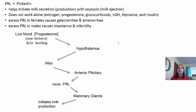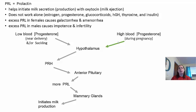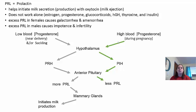Milk production can be inhibited if a woman gets pregnant while breastfeeding, because progesterone levels rise again. When it's time to wean the baby, decreased suckling or high blood progesterone causes the hypothalamus to release prolactin-inhibiting hormone. This tells the anterior pituitary to release less prolactin, which means the mammary glands are stimulated less, stopping milk production.